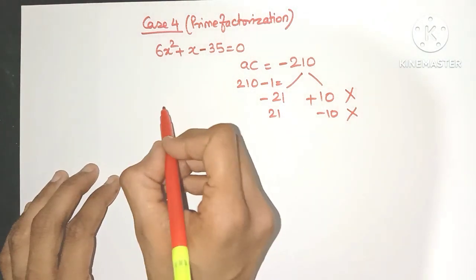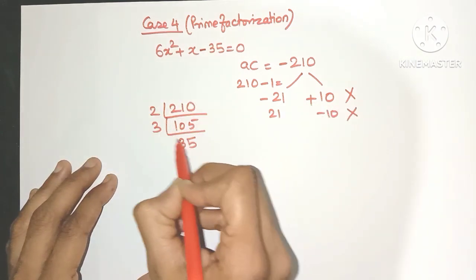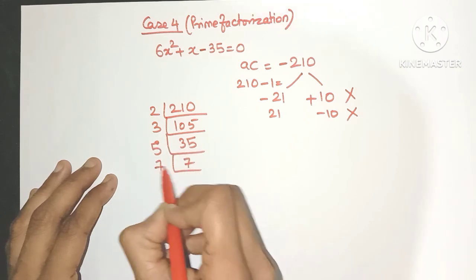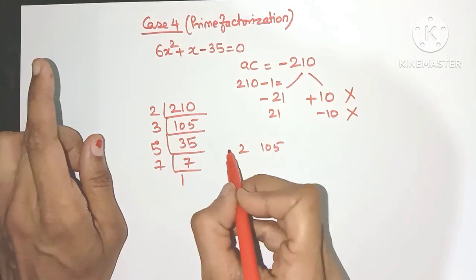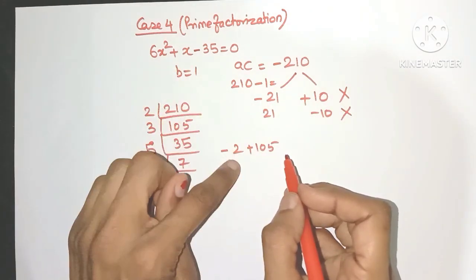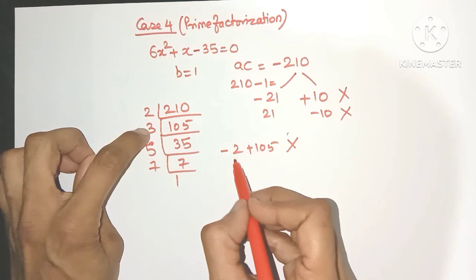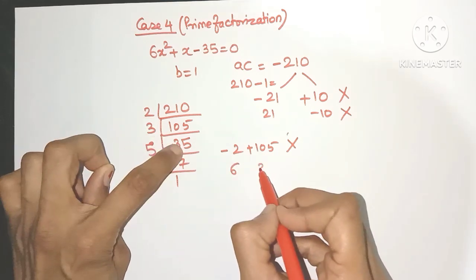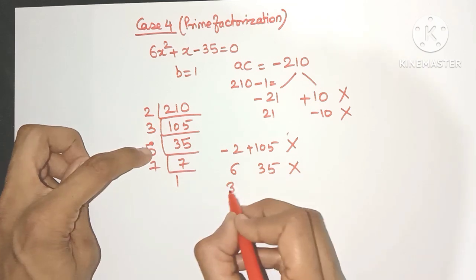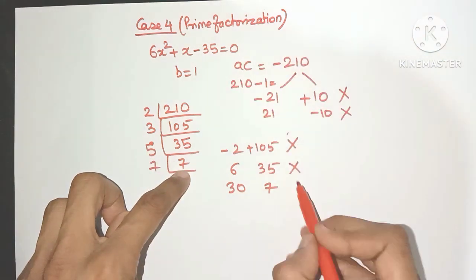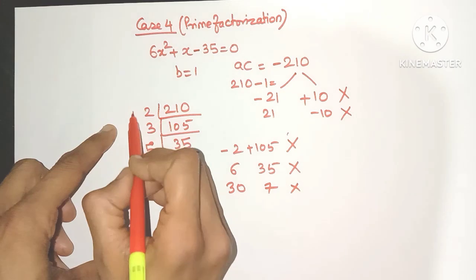So we use Case 3, prime factorization of 210. We try combinations in order: 2 and 105 — difference is not 1. Next, 2 into 3 is 6 and 6 into 35 — difference not 1. Then 2 threes are 6, 6 fives are 30, 30 into 7 — difference again not 1. We are not getting the necessary factors when multiplying in the same sequential order.